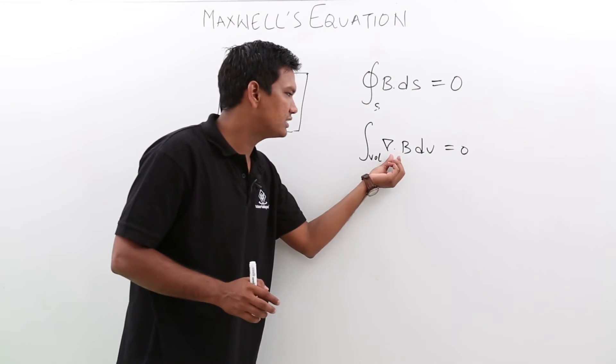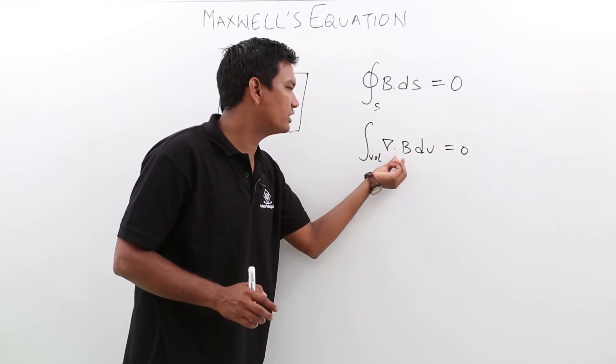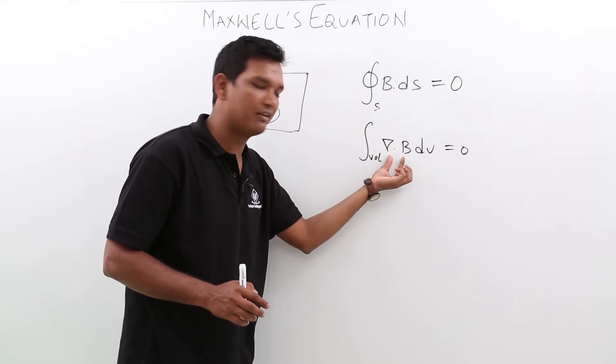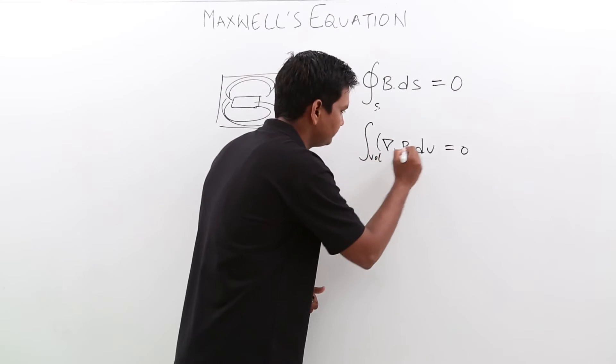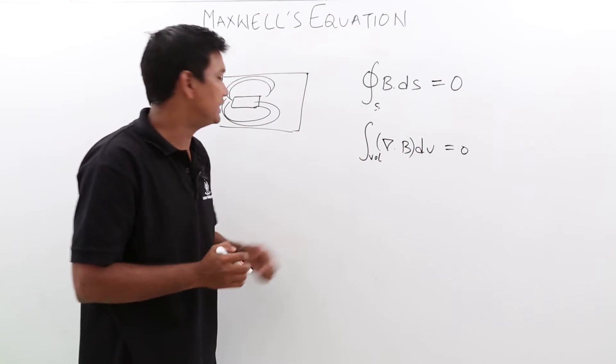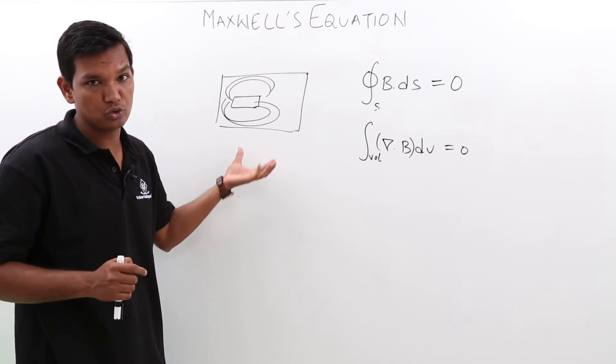∇·B is nothing but what? It is talking about the divergence. The same equation I have written by applying the Gauss divergence theorem. So it is nothing but the divergence of magnetic field in a closed surface.